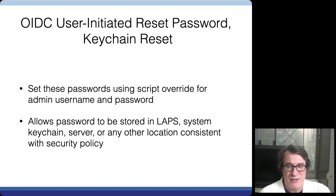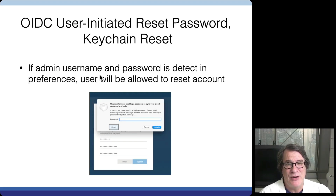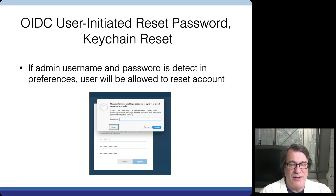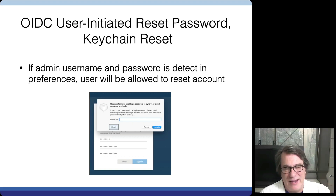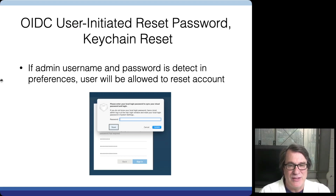Once XCreds determines it has access to an admin username and password, a reset button appears. If the user enters their cloud password and XCreds finds an existing account with a different password, it prompts them for the prior local password. If they don't know it, they can click reset. XCreds will use the local admin credentials to move the keychain out of the way, create a new keychain, and reset the local password to the cloud password — seamlessly allowing them to log in.